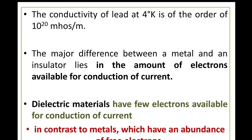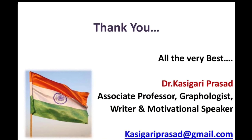The major difference between a metal and an insulator lies in the amount of electrons available for conduction of current. Metals have an abundance of free electrons responsible for conduction of current. Dielectric materials, in contrast to metals, have very few electrons available for conduction of current.